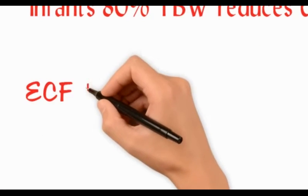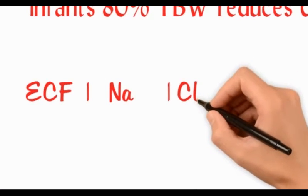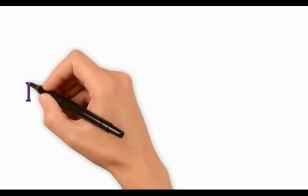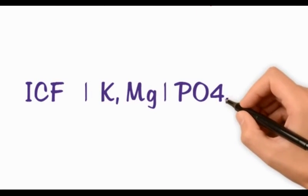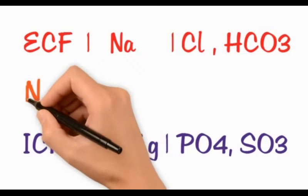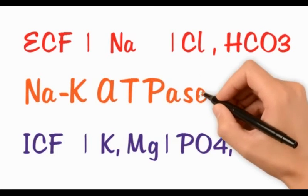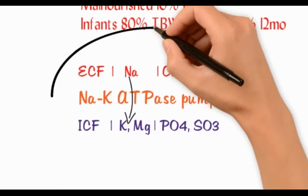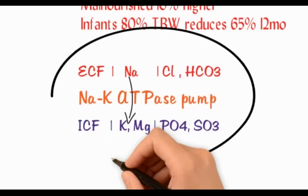The major cation of the extracellular fluid is sodium. The major anions are chloride and bicarbonate. The major cations of the ICF are potassium and magnesium, whereas the major anions are phosphates and sulfates. The sodium-potassium pump pumps sodium out of the cell and potassium into the cell, maintaining the balance.